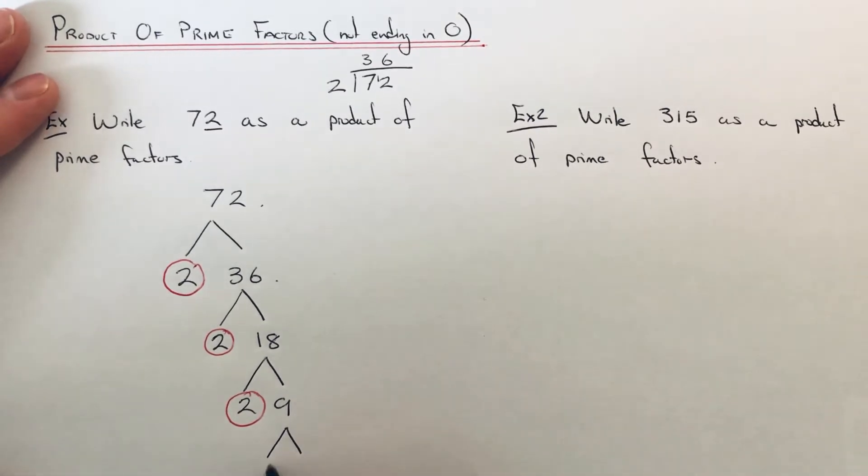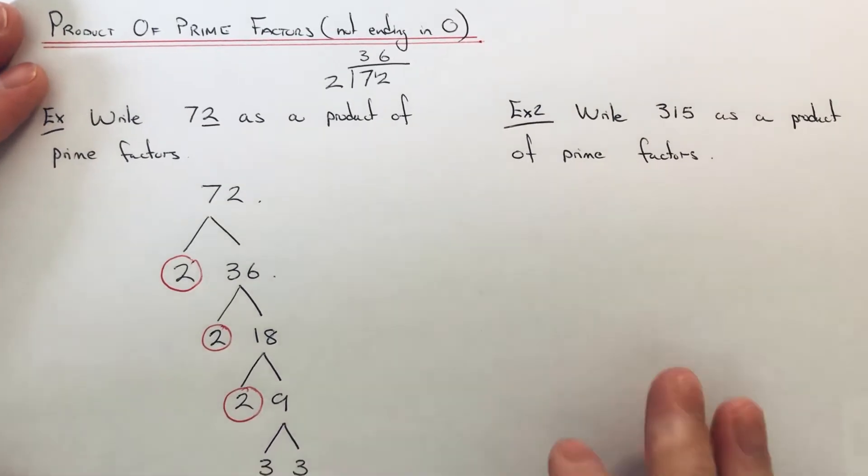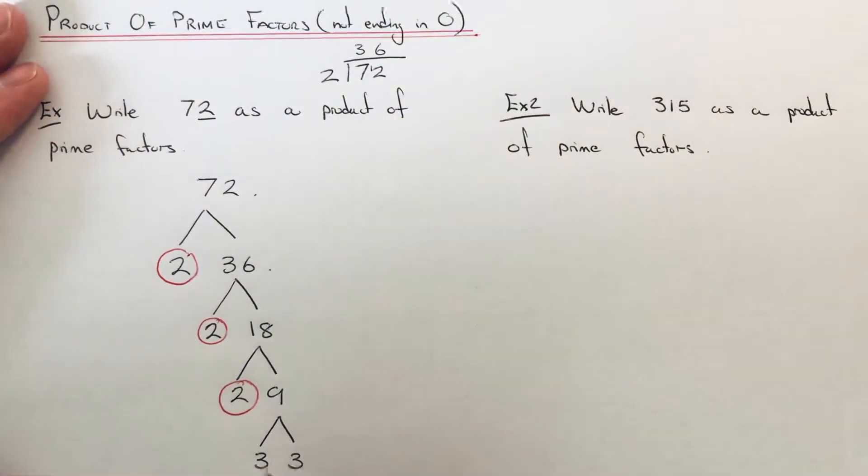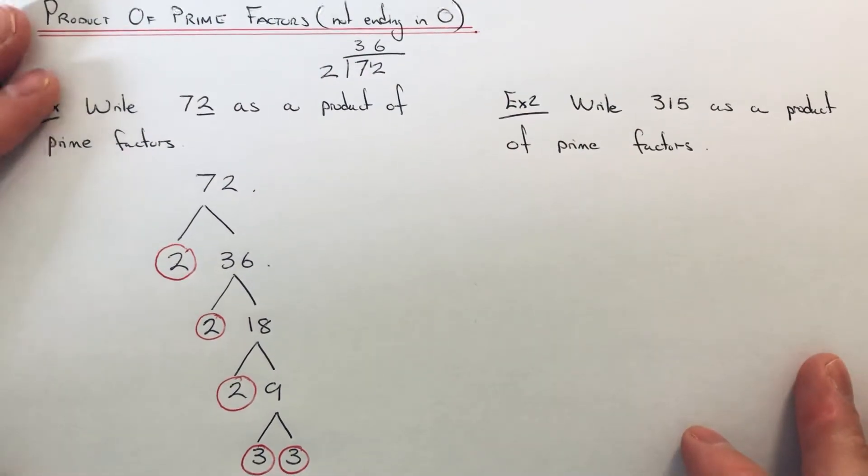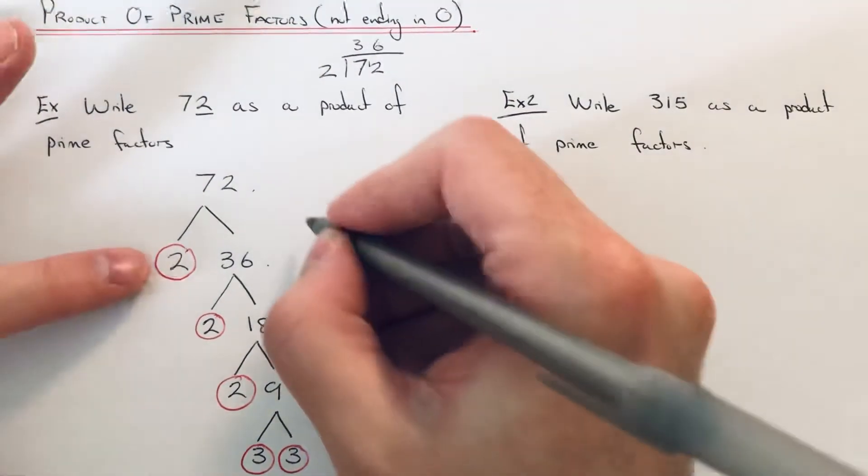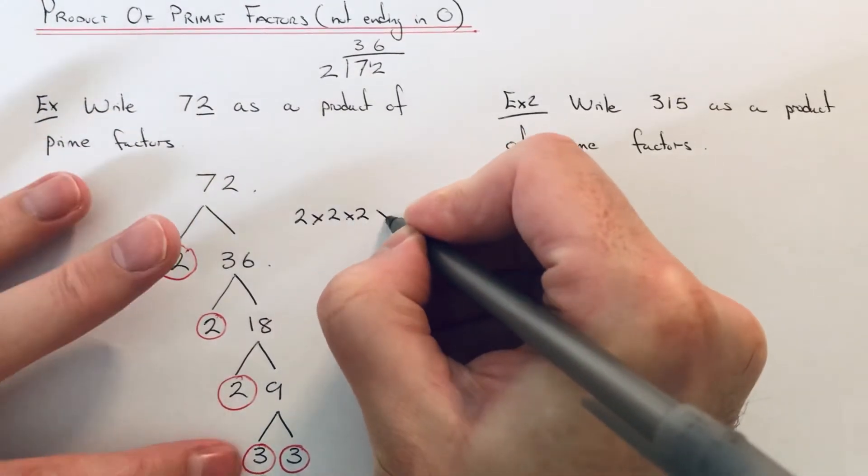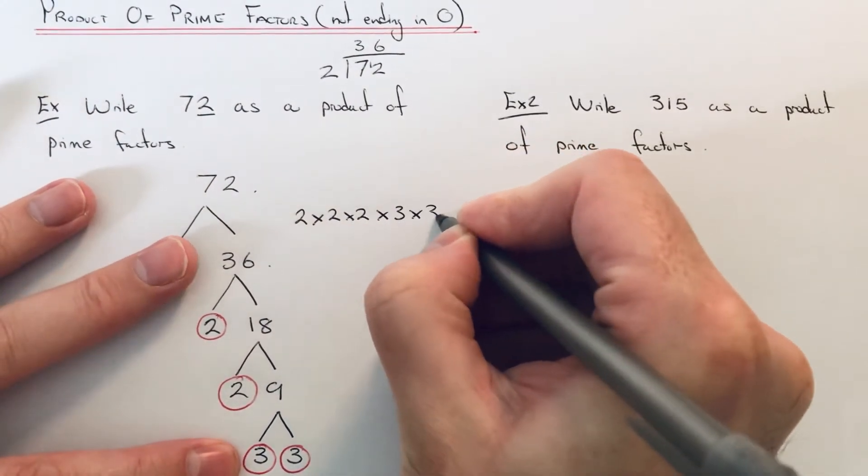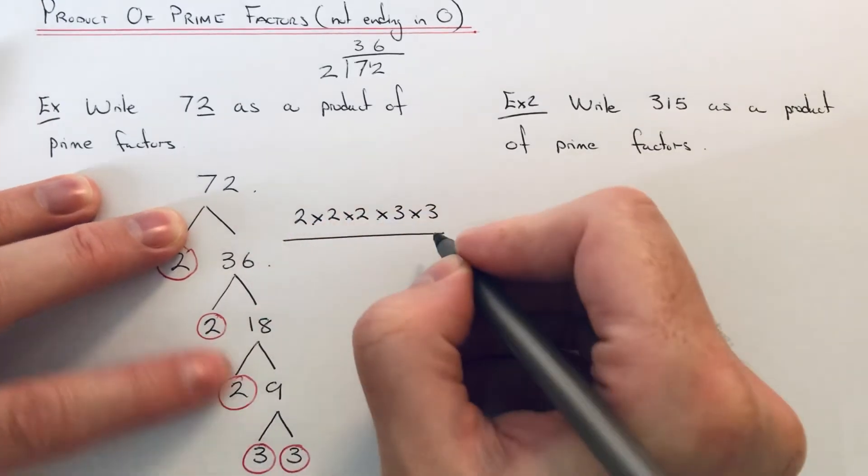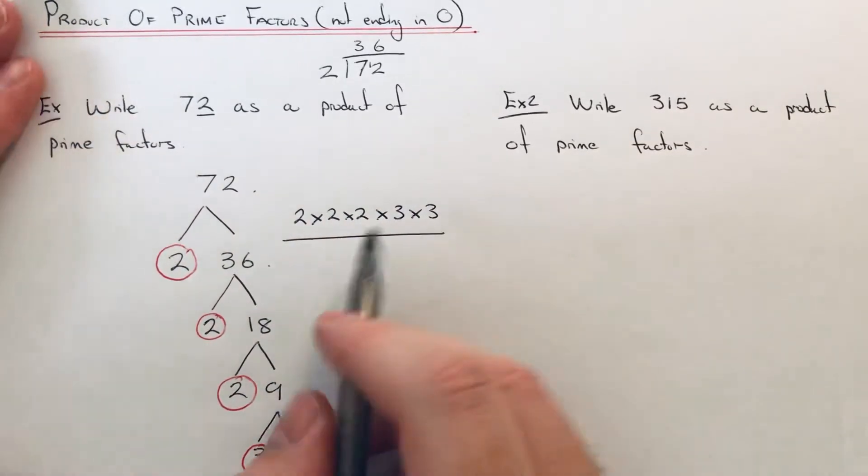Again 2 is prime. 9 is not prime because it's in the 3 times table, so 3 times 3 is 9, and these are both prime numbers. So we just need to write the final answer as 2 times 2 times 2 times 3 times 3. This is the product of prime factors because they all multiply to give 72.